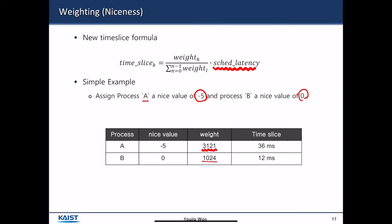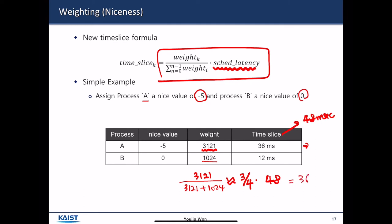According to this formula, Process A will approximately get 3 fourths of entire time slice, and time slice length is 48 milliseconds by default. And then you have 3100 weight value for Process A, and 1000 weight value for Process B. So if you consider time slice for Process A, it will correspond to 3121 over 3121 plus 1024, and 3121 corresponds to 3 over 4. So if you multiply it by the length of sched_latency, then that will end up at 36 milliseconds. So if you have a lower nice value, then you can have a larger share of the time slice.